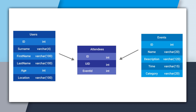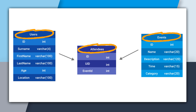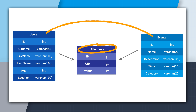This is a relational model that backs an event website that allows users to sign up for events. To model this relationally, we will create a users table, an events table, and an attendees table. Attendees is a table that relates users to events.